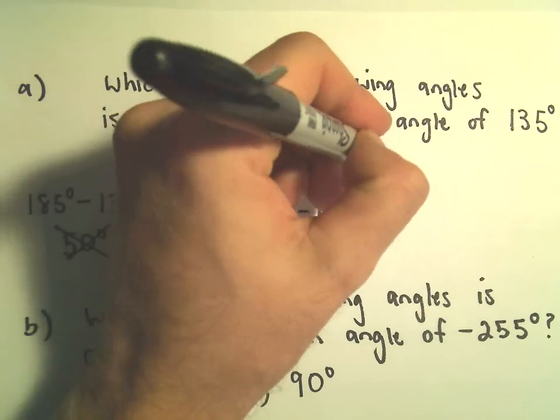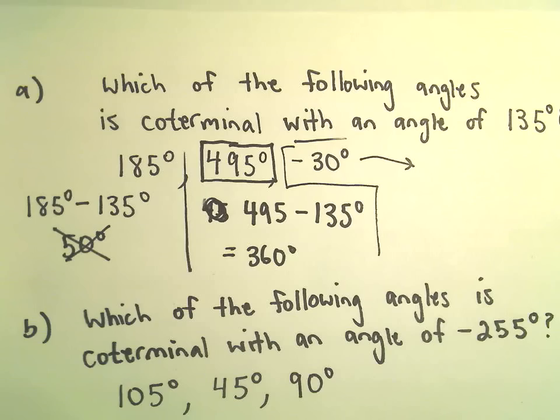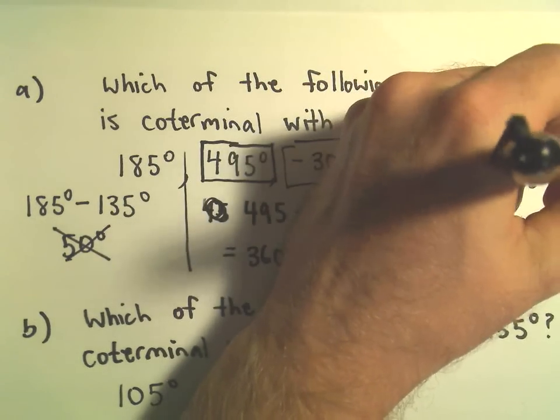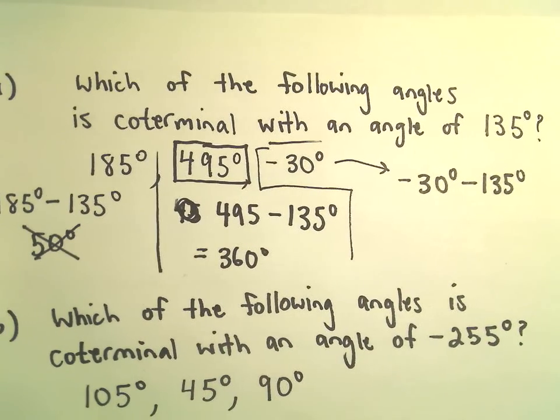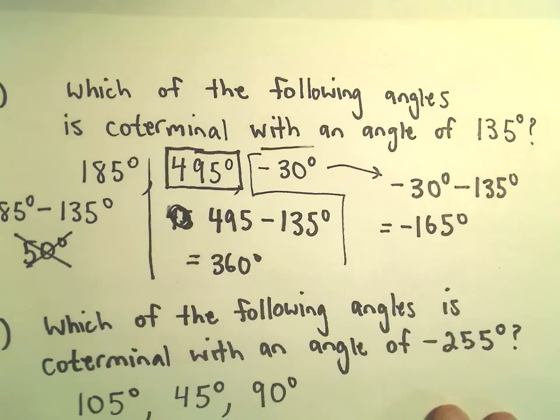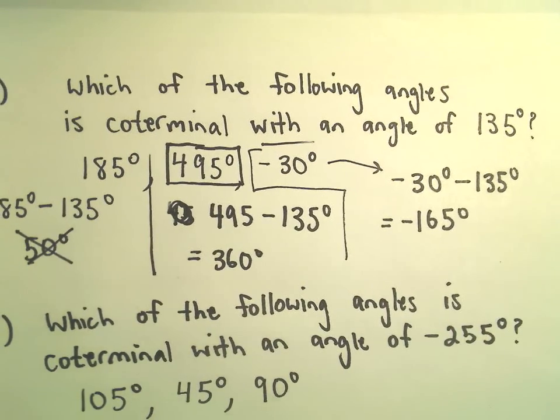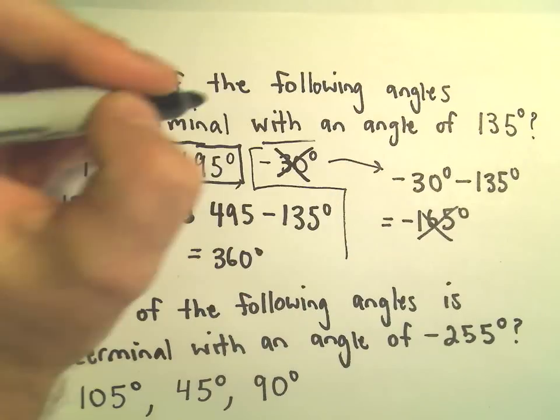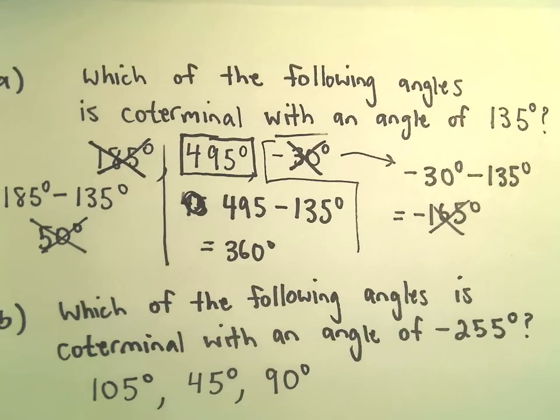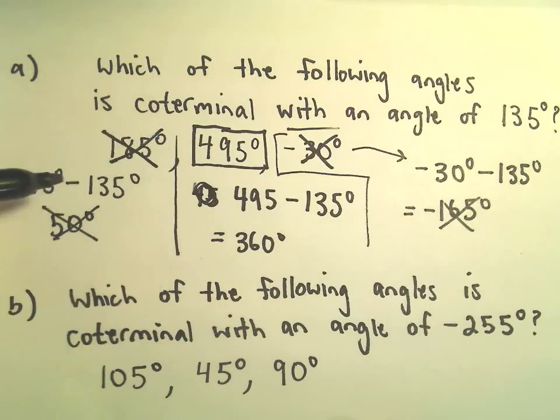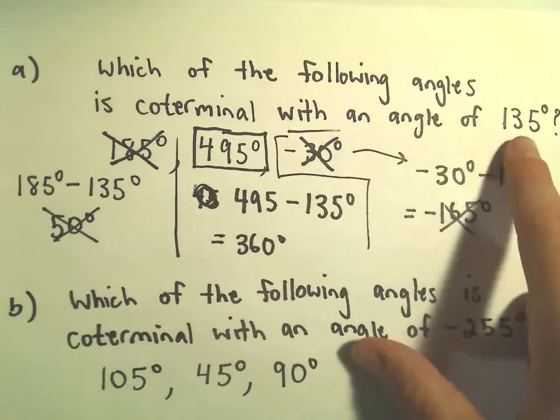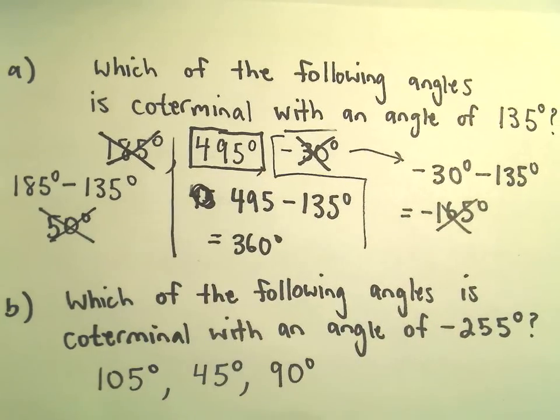Let's check our negative 30 degrees next. So if we take negative 30 degrees and subtract away 135 degrees, in this case we're simply going to get negative 165 degrees. And again, that's not a multiple of 360, so negative 30 degrees is not coterminal. 185 degrees is not coterminal. The only coterminal angle of the three I had listed is 495. Again, there's infinitely many angles that are coterminal with 135 degrees, but that's the only one we have listed here.